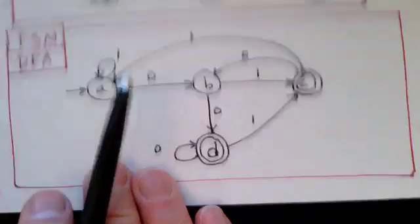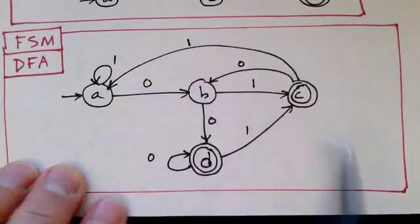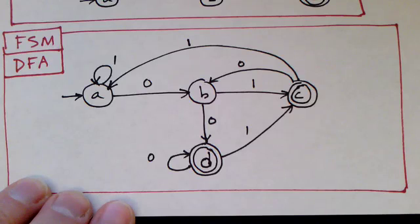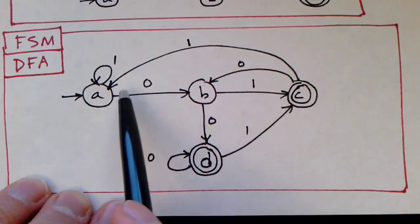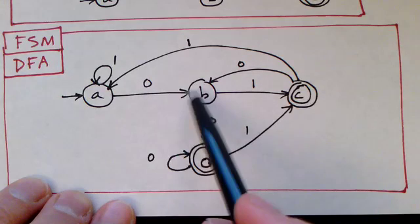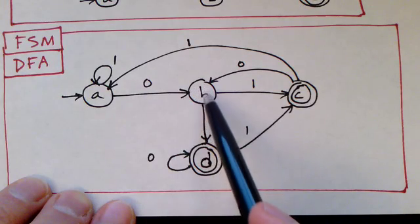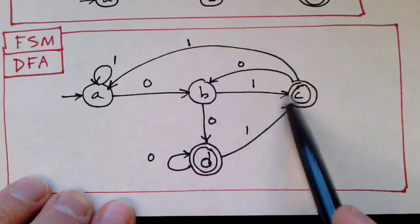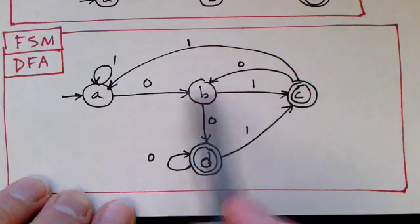There is an equivalent finite state machine that does the same thing, and here it is. I'm not sure whether you would guess it. You could try figuring this out on your own. We can kind of see how this thing works. First of all, it's deterministic because from every state there's a zero and a one labeling edges going out.